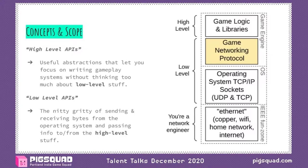At the very bottom of the stack we have your network engineer level — the lowest level of everything. There are tools you can use to explore this area, like Wireshark. The Linux kernel exposes some of this stuff too. But in general we don't need to think about stuff at the lowest level here. We're just going to be focusing on the area highlighted in yellow: the game networking protocol piece.